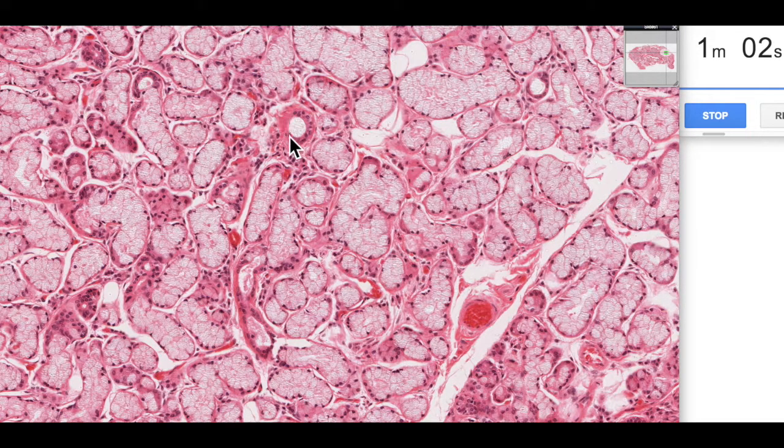We can see a duct here. So here's an intralobular duct. Here's another little one over here. So they move from a simple cuboidal to a tall simple cuboidal, and then eventually they may form a striated duct.